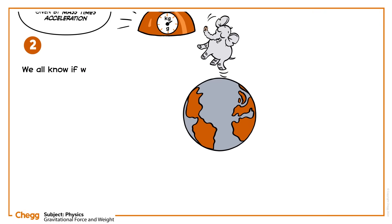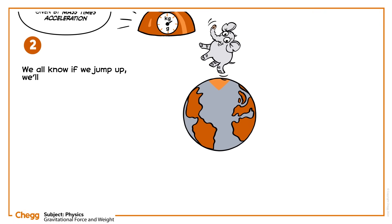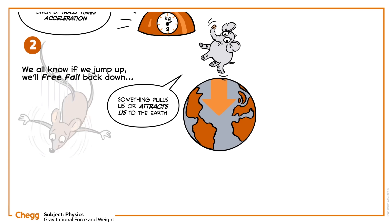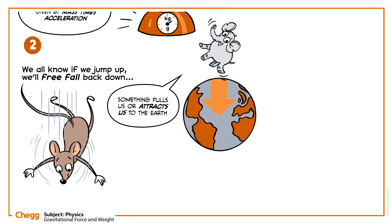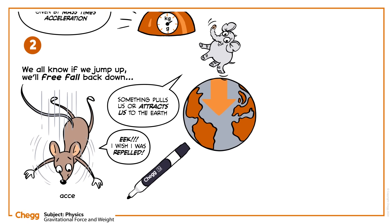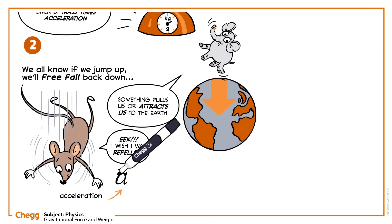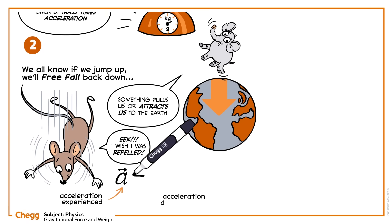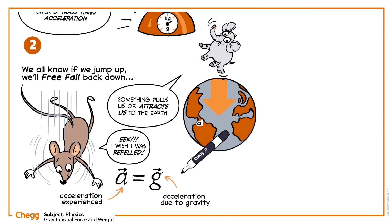We all know if we jump up, we'll free fall back down. Something pulls us or attracts us to the Earth. Consider an object that is free falling under gravity. The acceleration A experienced by this free falling object is called the acceleration due to gravity, G, and it always points downwards to the centre of the Earth.